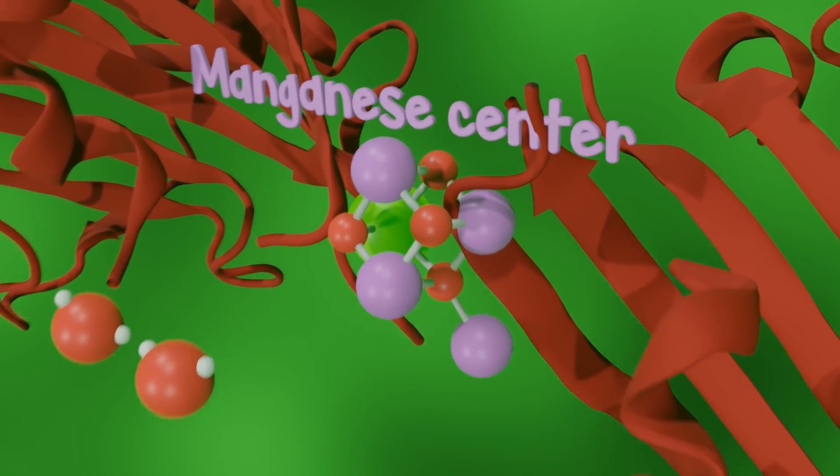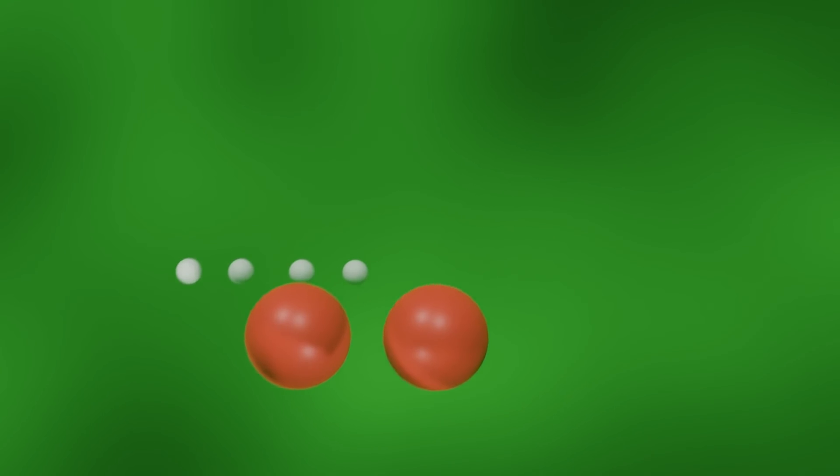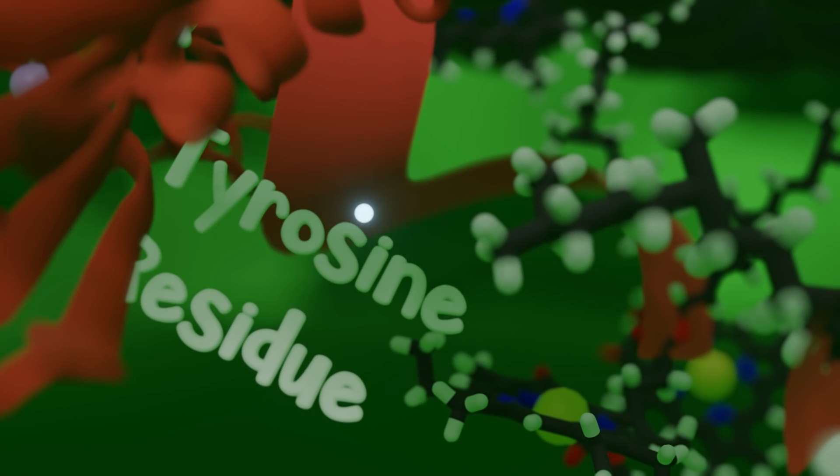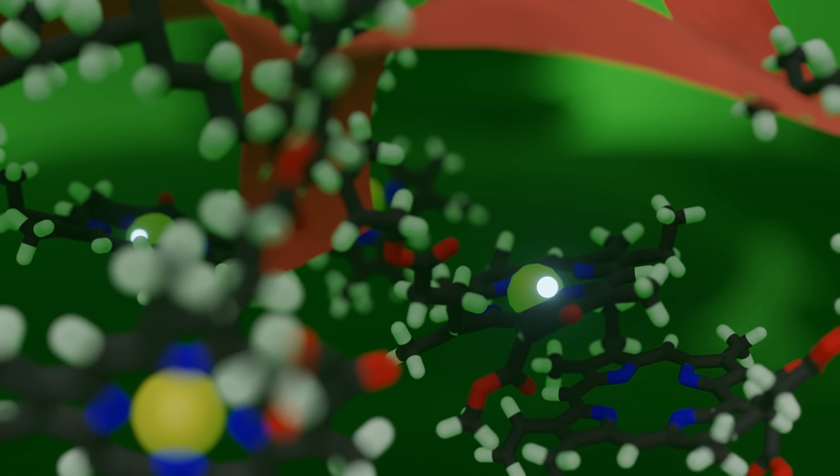This complex stores and uses the energy of four photons to split two water molecules using manganese atoms. In this process of splitting two water molecules, it creates four protons, one oxygen molecule, and four electrons. These electrons are passed via a tyrosine residue to the reaction center, thus allowing the next photon energy to potentially trigger another electron release from the reaction center.